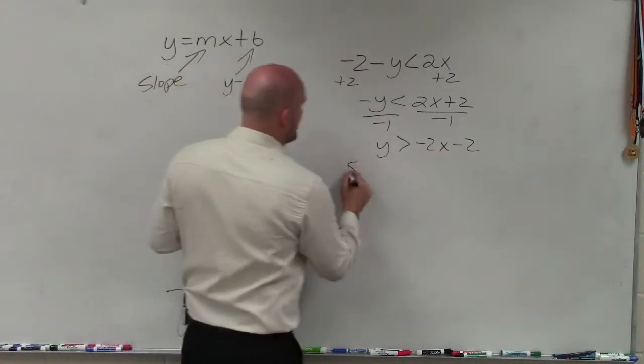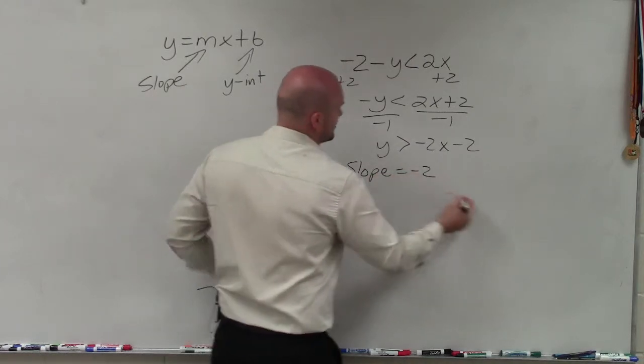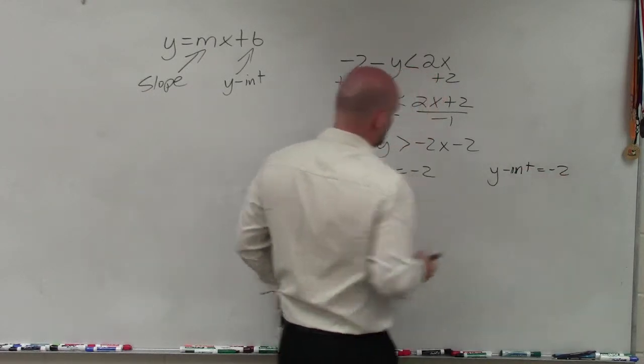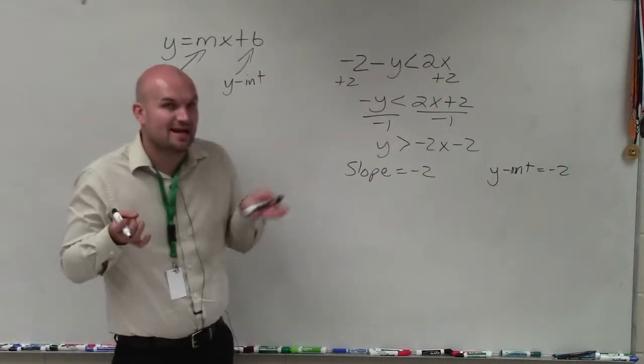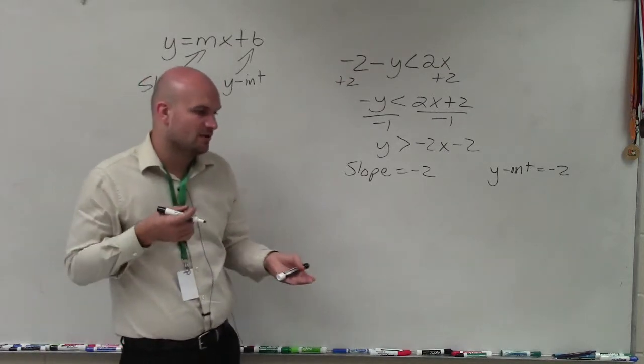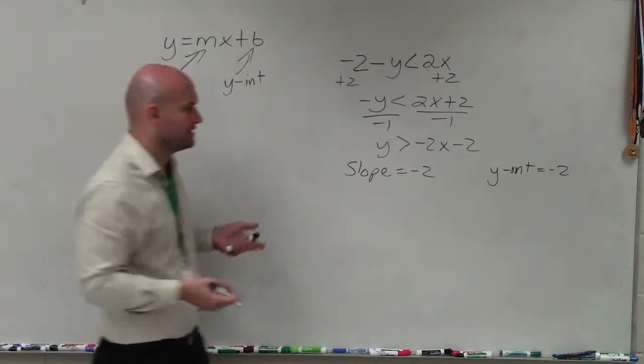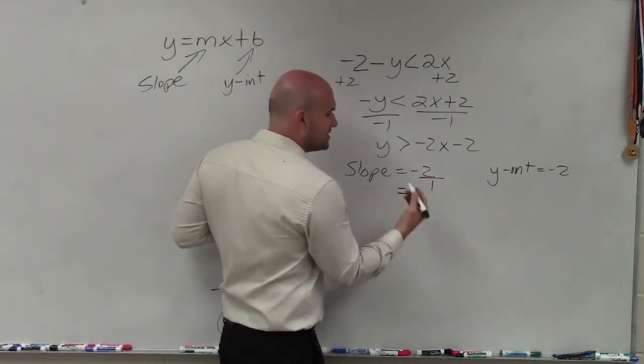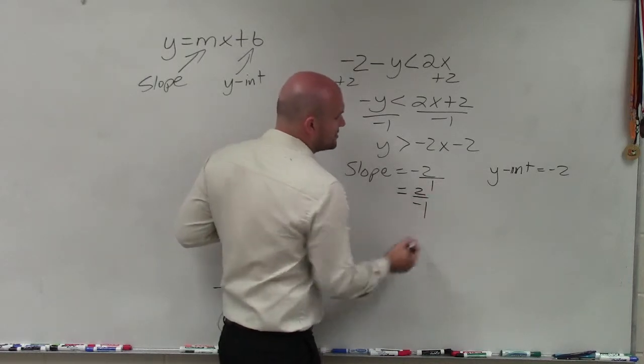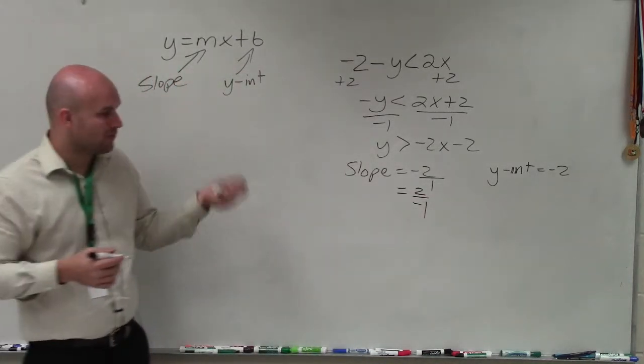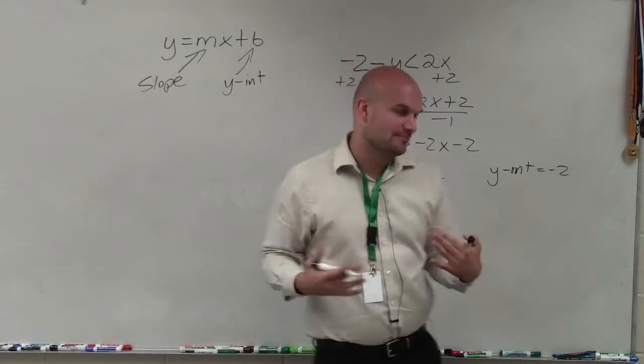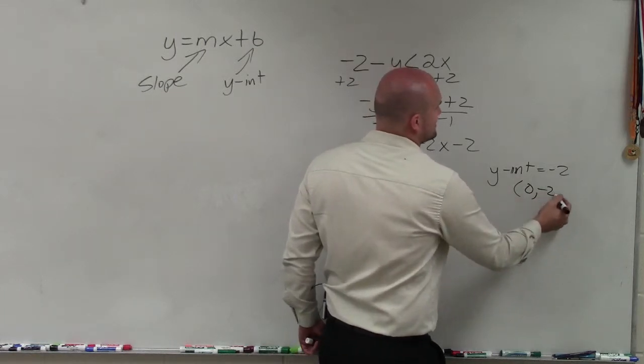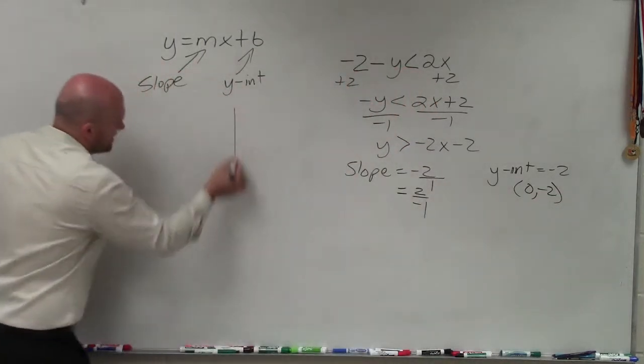Now I can identify my slope is equal to negative 2, and my y-intercept is equal to negative 2. Now it's important to understand that the slope is a ratio between the change in the y values and x values of two coordinates. So we want to write our slope as a fraction. So usually we just write 2 over 1, but we could also write that as positive 2 over negative 1. And the y-intercept represents a coordinate point, so the coordinate point for the y-intercept is x equals 0 and y equals negative 2. We do that to help us graph.